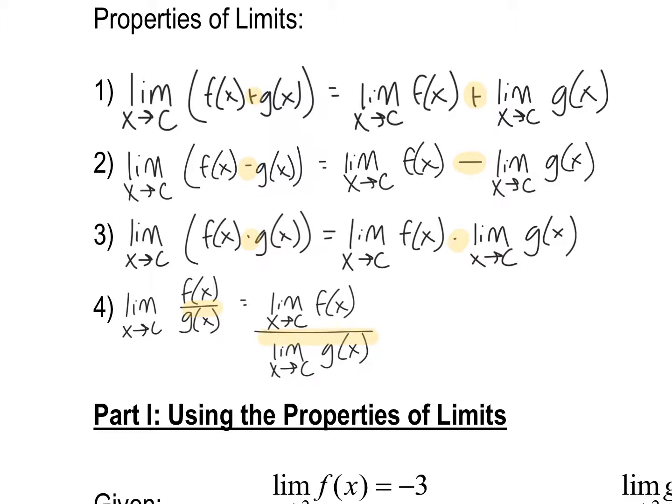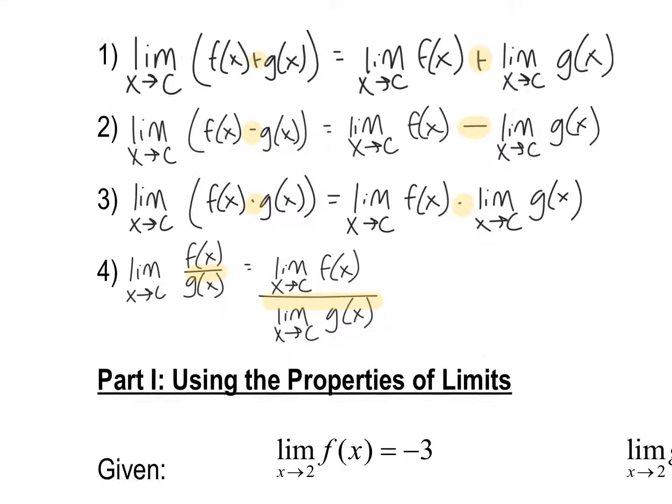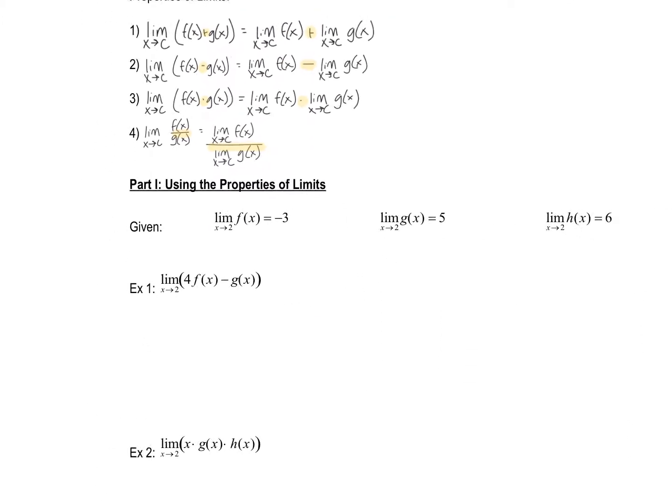I'm going to blast through these first couple examples because they're very quick. First one is that we're given some information up here. We're given three different limits as x approaches two for all of them, but three different formulas.